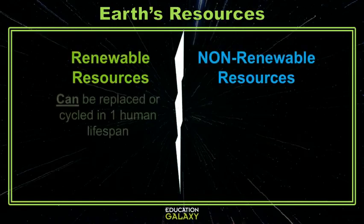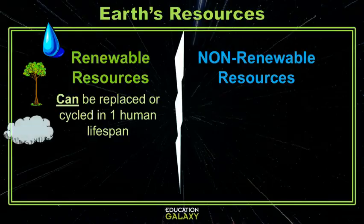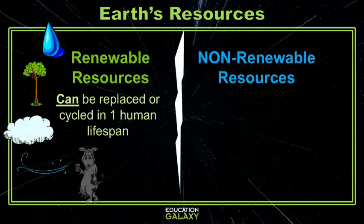Renewable resources are all of the resources that can be cycled or replaced in one human lifespan. These include things like water, plants, air, wind, animals, and soil.